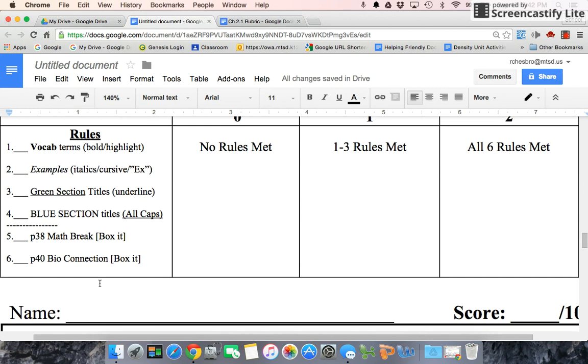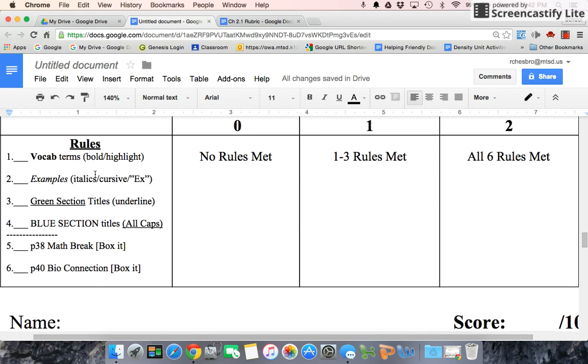The third category are rules. Make sure that vocab is in bold, examples are in italics, green section titles are underlined, blue section titles are all capitals. If you happen to be handwriting an outline, instead of italicizing, you can write in cursive or you can just write EX, and that will tell me that it's an example. You can highlight if you're handwriting to show bold vocab terms. Notice the math break has to be included and you have to put a little box around it so it's easy to find. And the bio connection box that as well.